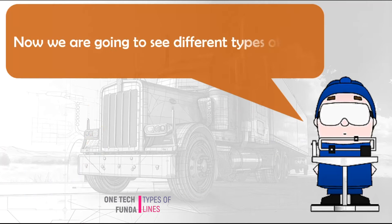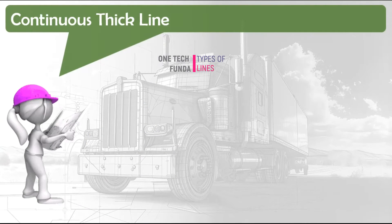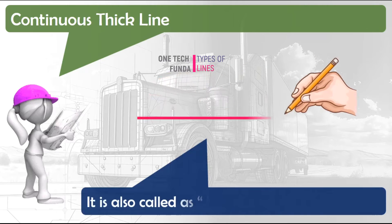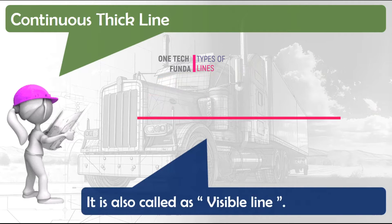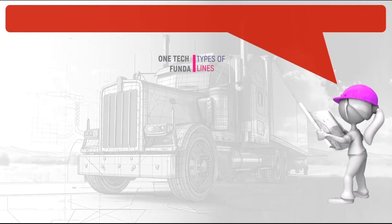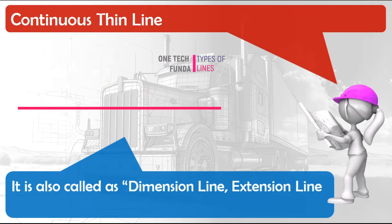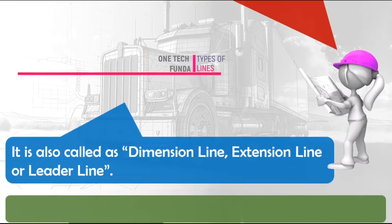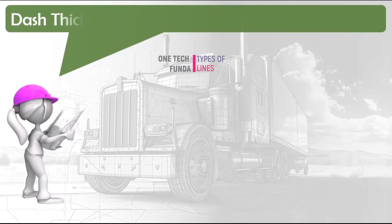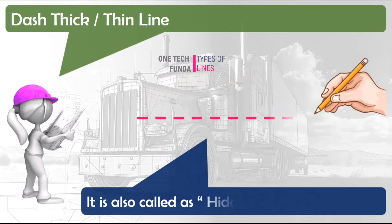Now we are going to see different types of lines. Continuous thick line — it is also called a visible line. Continuous thin line — it is also called a dimension line or extension line. Dash thick line — it is also called a hidden line.